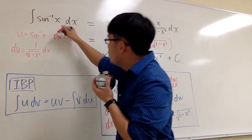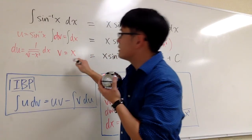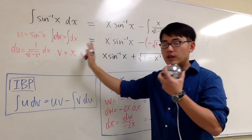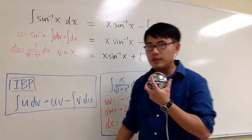For dv equals dx, we are going to integrate both sides, and we can get v equals x. And with this, we are ready to move on. These are the ingredients that we need for the integration by parts.